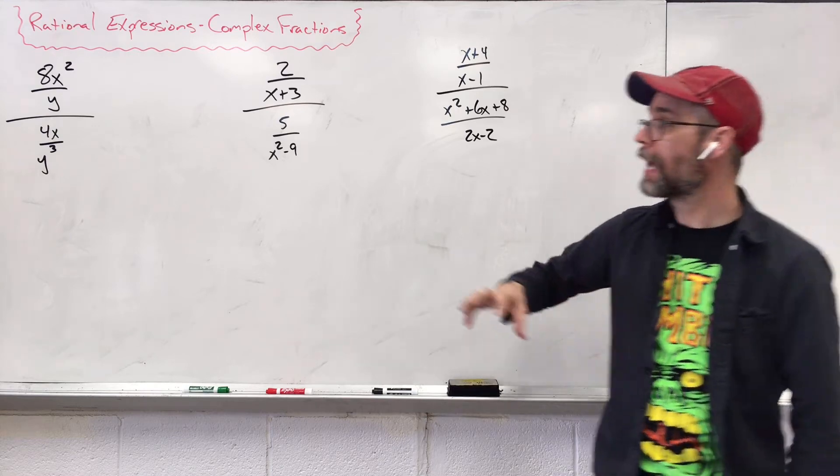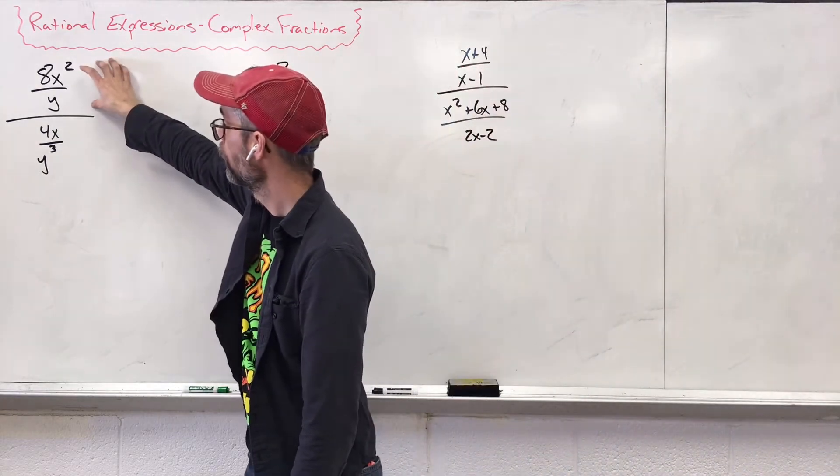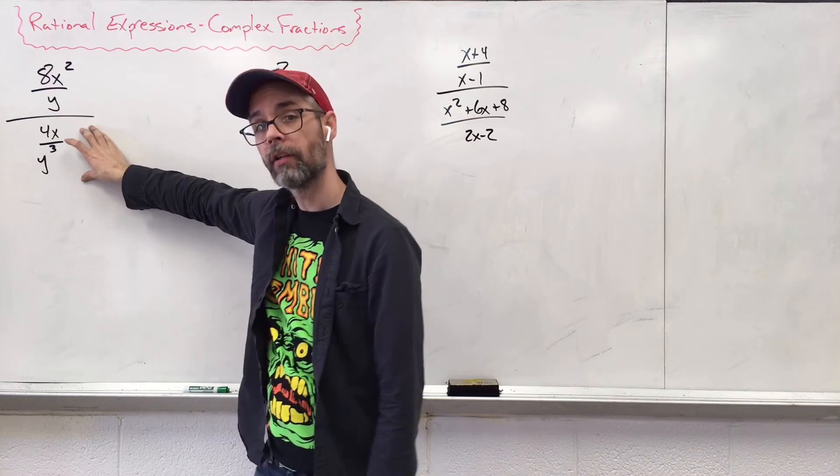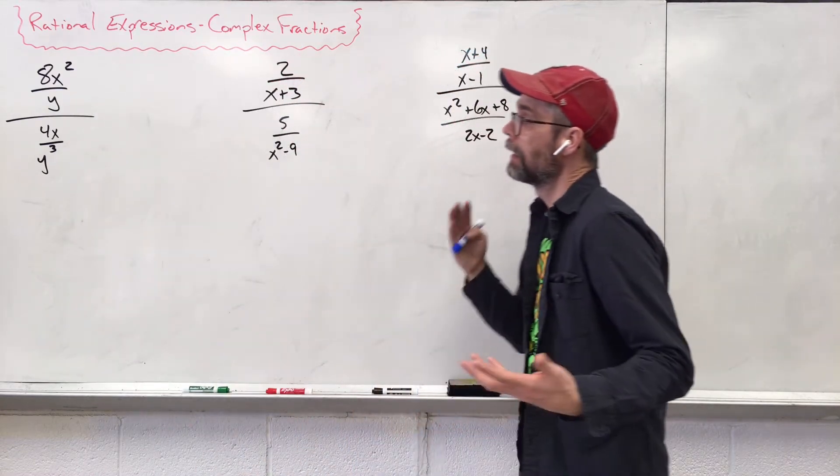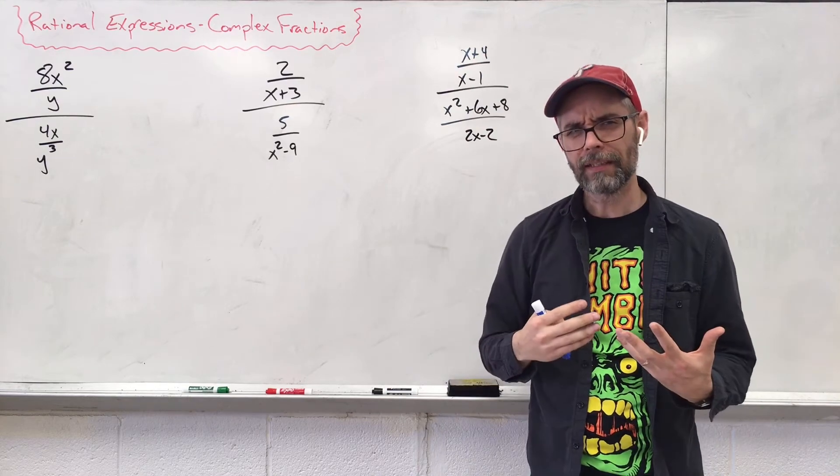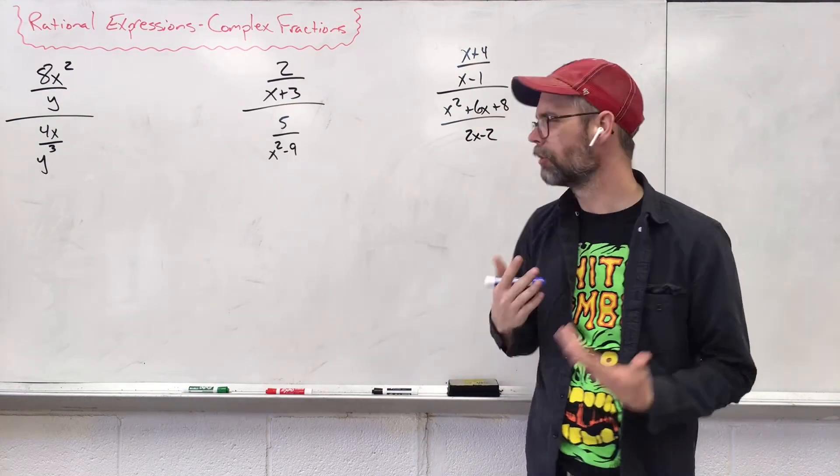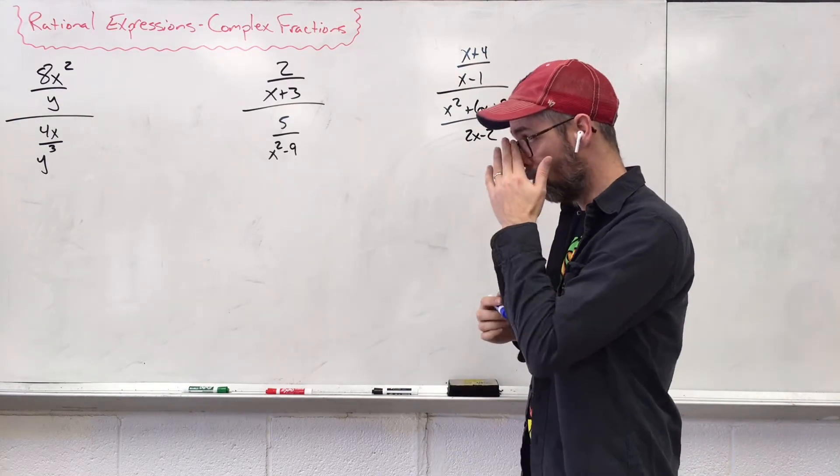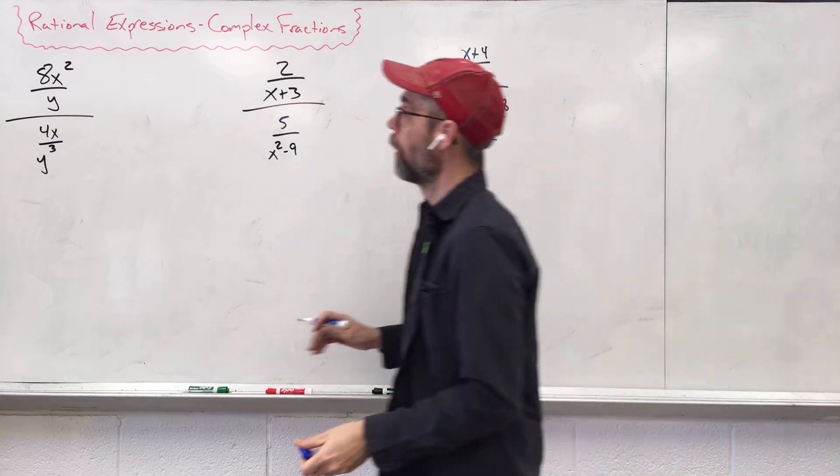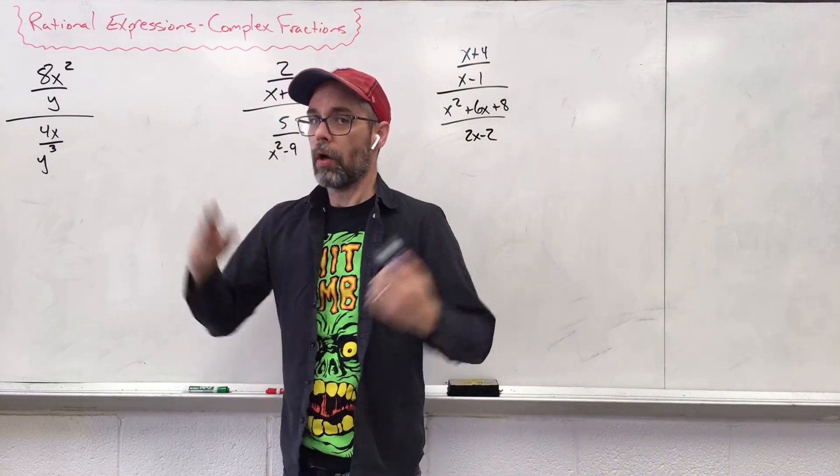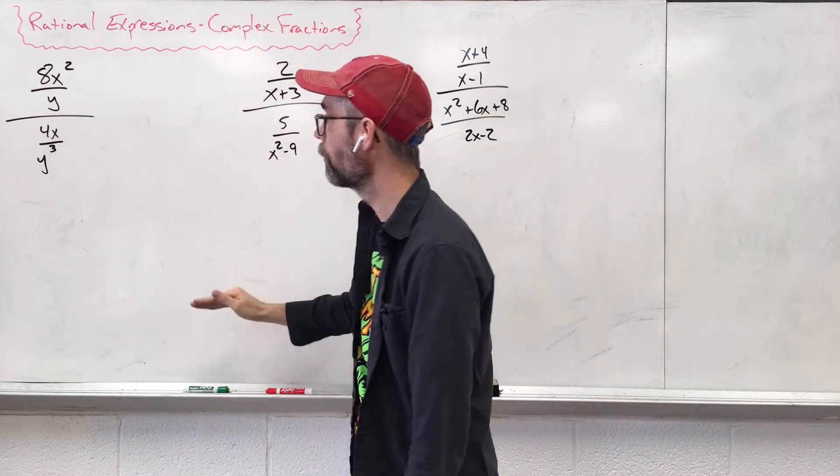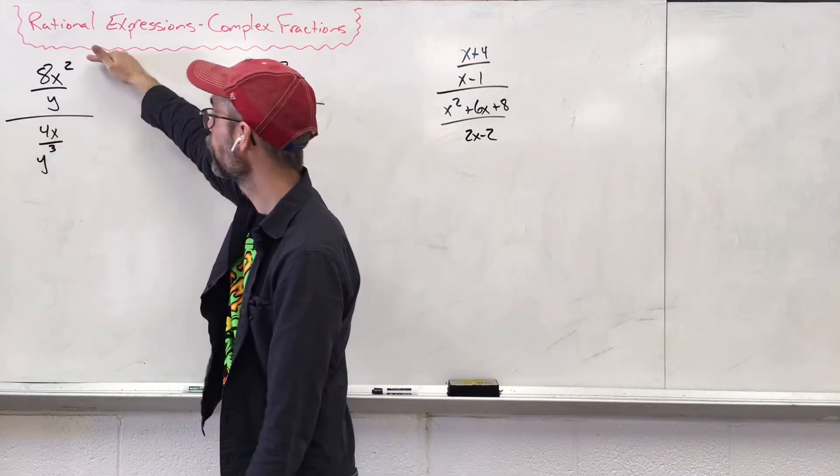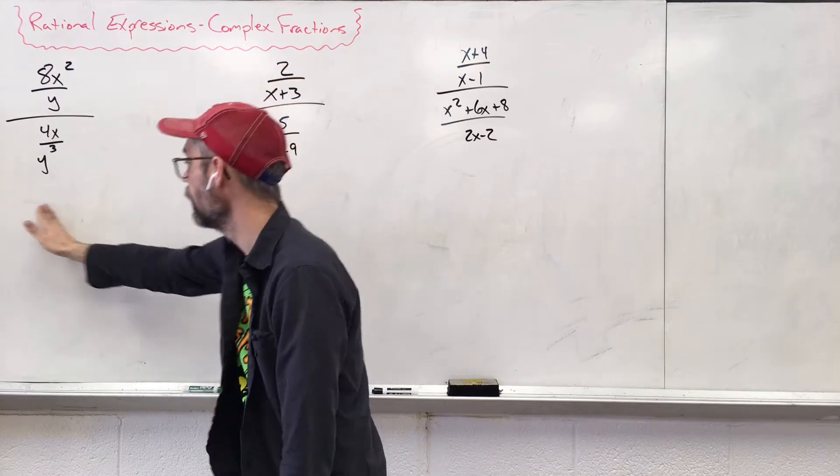Basically we have a fraction and a fraction creating a big fraction, and all we need to know is how to rewrite it to understand what's going on. We usually read from left to right, top down. We're going to take a top down problem and rewrite it left to right.